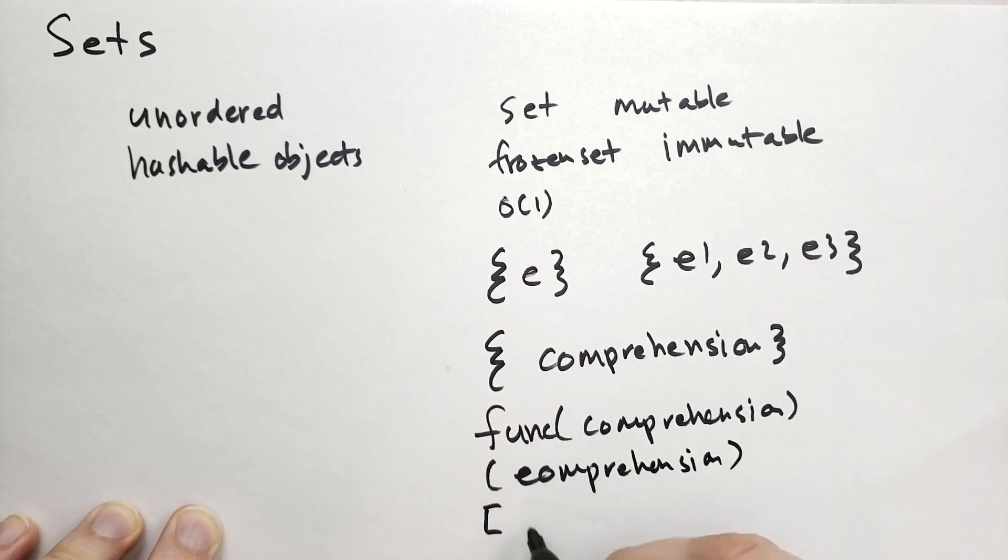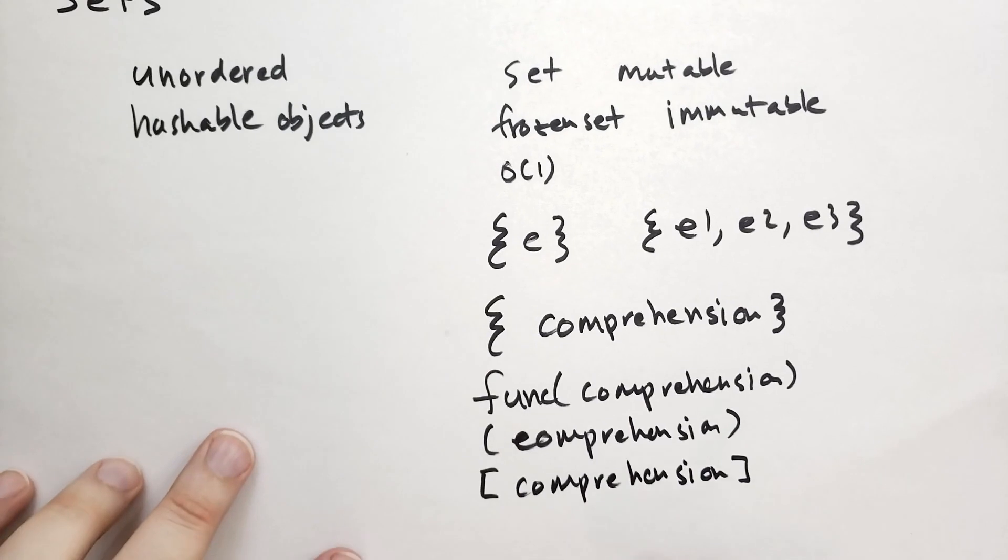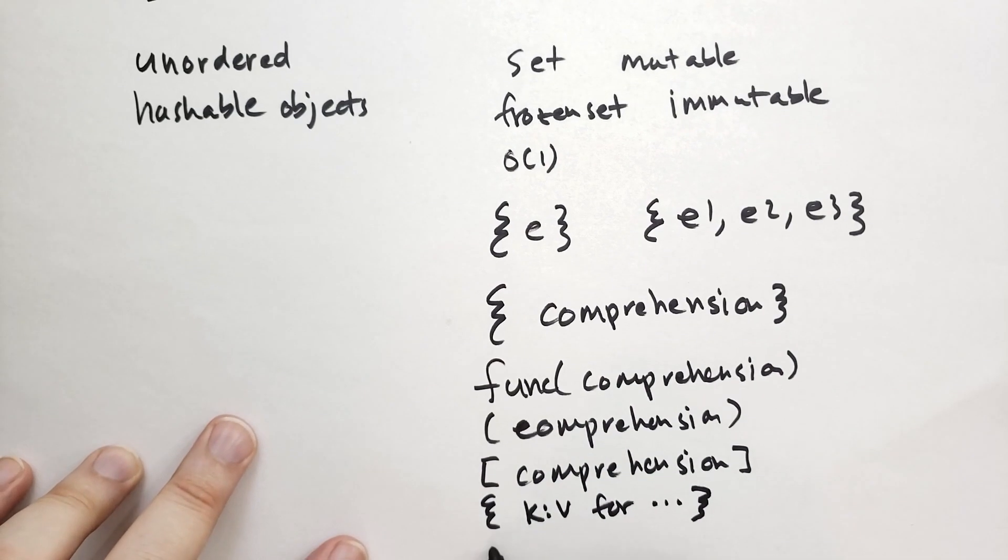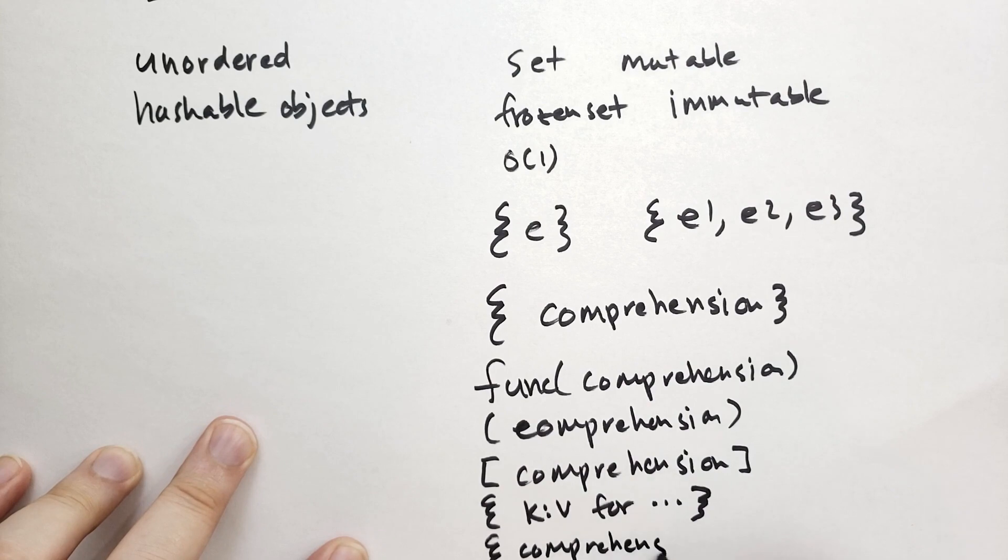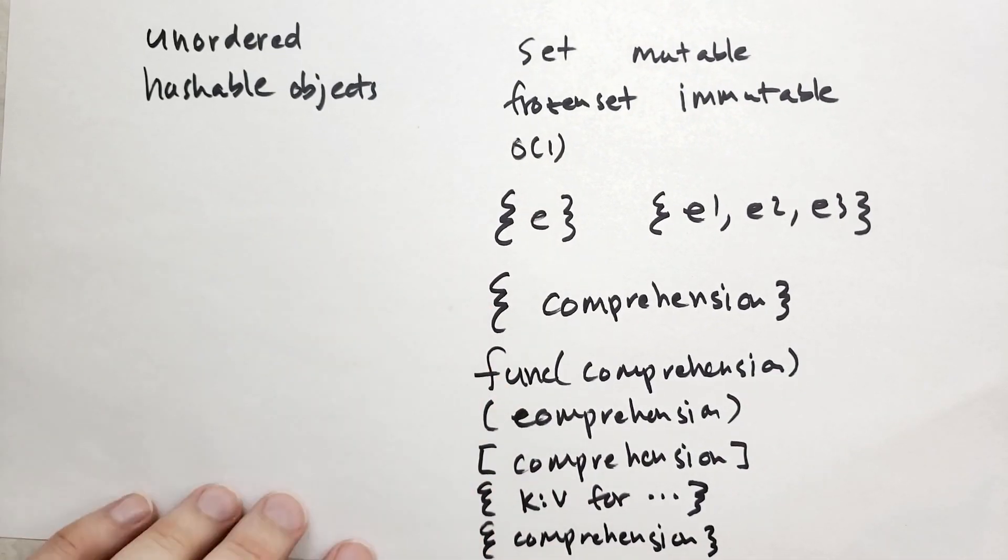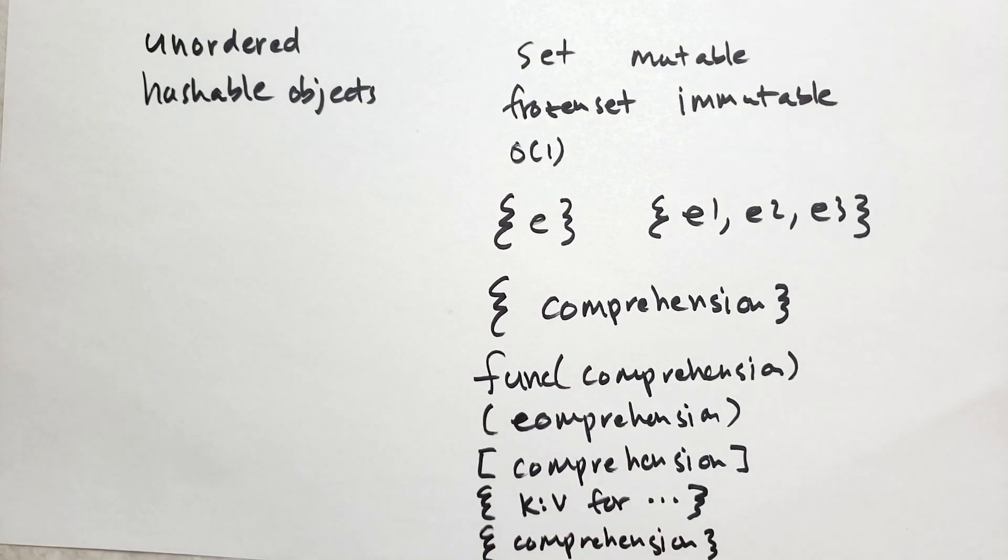You can have a list comprehension. You can have a dictionary comprehension, so this is key value four. And then finally, we can have a set comprehension. Give yourselves a pat on the back, you've now mastered at least one aspect of Python's programming language.